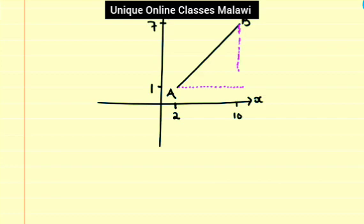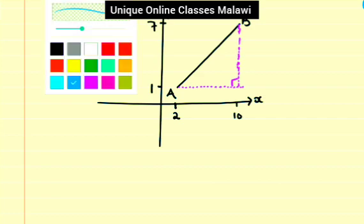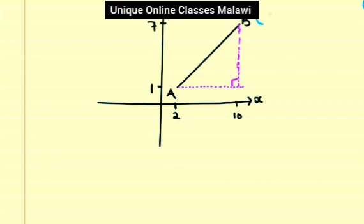We have formed a right-angled triangle. Now, to find the gradient between points A and B, remember the coordinates: B has x equals 10 and y equals 7, and A has x equals 2 and y equals 1.